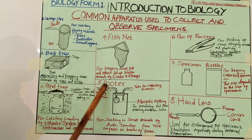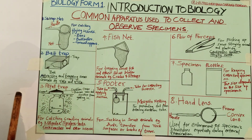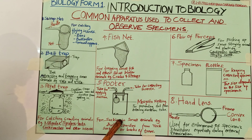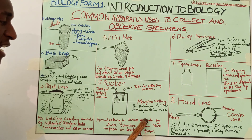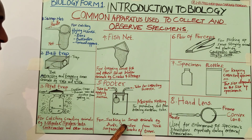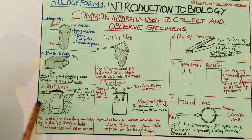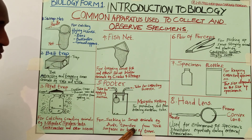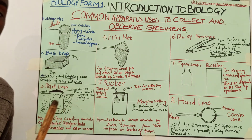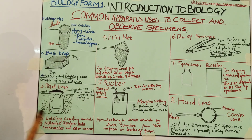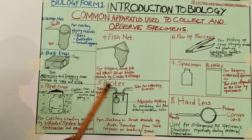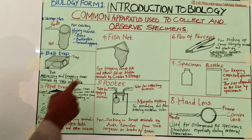Number five is the pooter. The pooter is a very special apparatus used for sucking small animals — for example ants and termites — from rock surfaces or barks of trees. These organisms are going to be collected from bark surfaces or rock surfaces. When you want to collect them, you use a pooter.